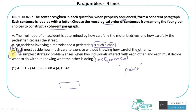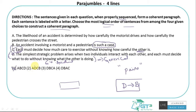D and B make a meaningful pair — D gives the general opinion about a strategic problem, and B says 'an accident involving a motorist and pedestrian is such a case,' giving a specific example. So D should come before B. Looking at the options, we can eliminate those where B comes before D. We're left with two options: DBCA and DBAC.